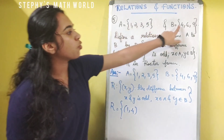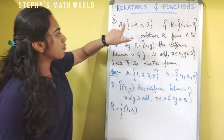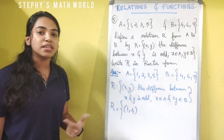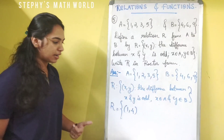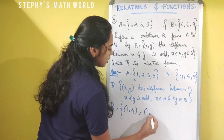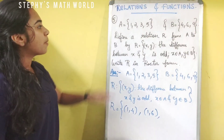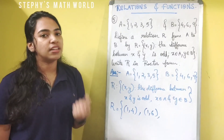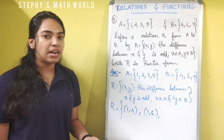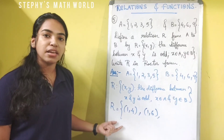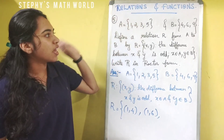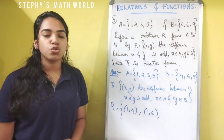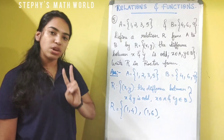Now (1, 6): 1 minus 6 equals minus 5, which is odd — so we include it. Then (1, 9): 1 minus 9 gives minus 8, which is an even number, so we cannot include that ordered pair. Moving to x = 2: the ordered pair (2, 4) — 2 minus 4 equals minus 2, which is even, so we cannot include it.